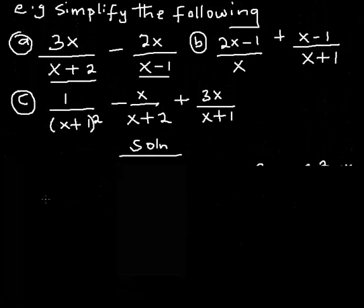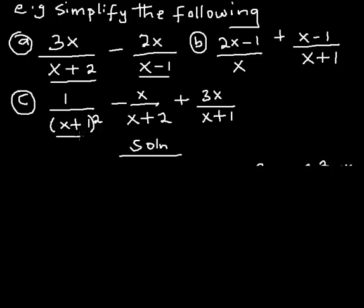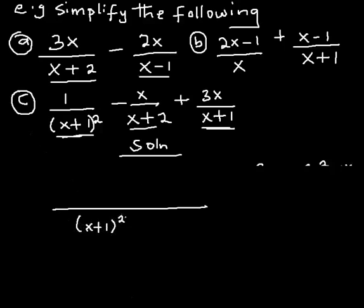Now for the last question. The denominators are (x+1)², (x+1), and (x+2). The highest factor — the LCM — is represented by (x+1)², since (x+1)² is also a multiple of (x+1), so I don't need to include (x+1) separately. My LCM is (x+1)²(x+2). Dividing (x+1)² by (x+1)² gives 1, and multiplying 1 by 1 gives 1.